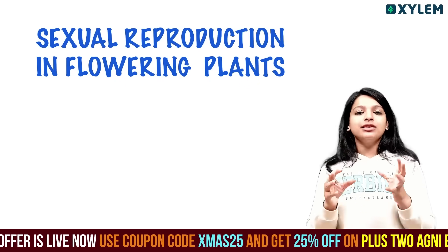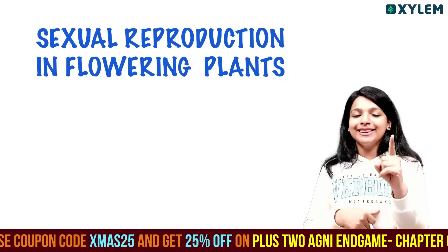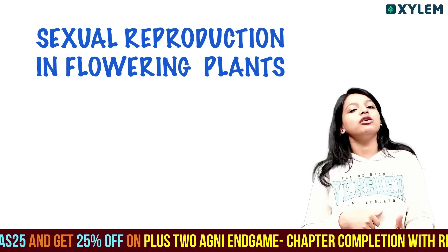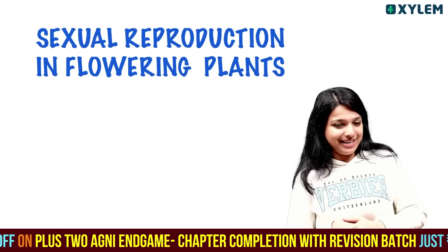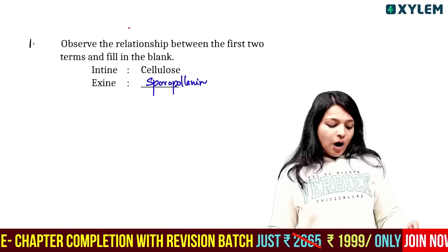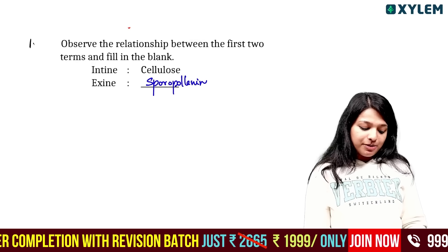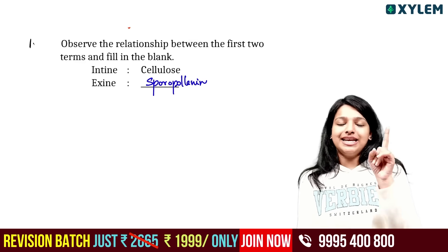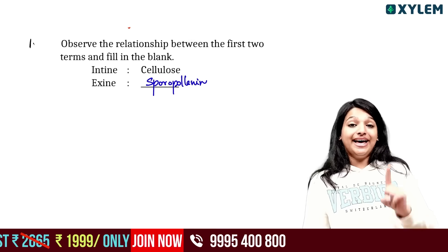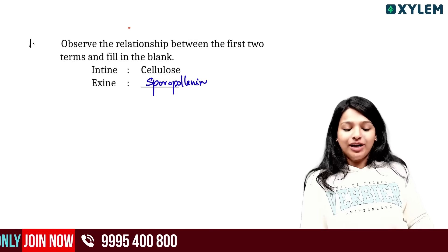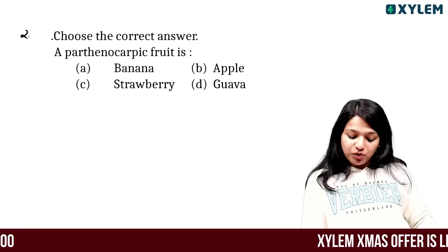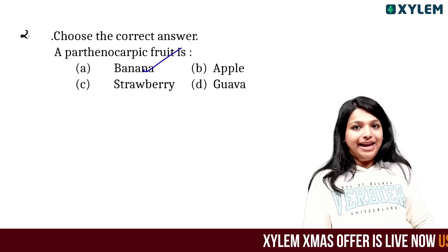First of all, observe the relationship between the first two terms and fill in the blanks. What is cellulose? What is sporopollenin? Choose the answer. In the example of a parthenocarpic fruit, you can use banana.